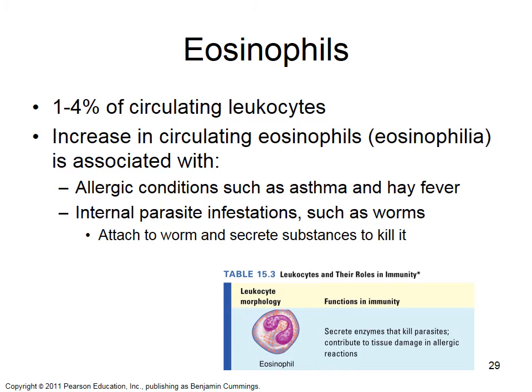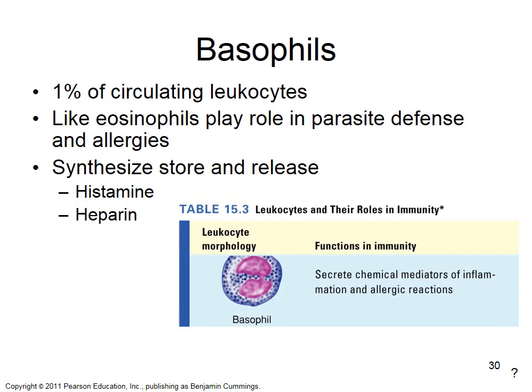Eosinophils evolved to kill parasites but also cause allergic reactions. Basophils also play a role in parasite defense and therefore now play a role in allergies — with very low numbers, only about 1% of circulating leukocytes. They synthesize, store, and release histamine and heparin. When you have allergies you take antihistamines because histamine causes the swelling response — swelling of mucous membranes, etc. Heparin is an anticoagulant that keeps blood flowing in the area.